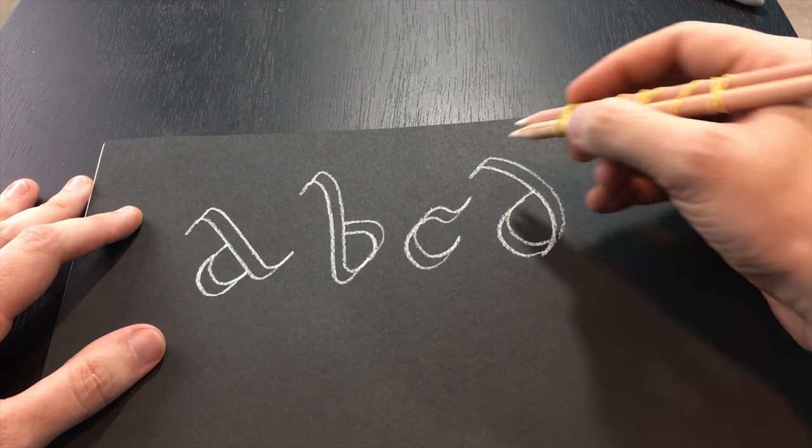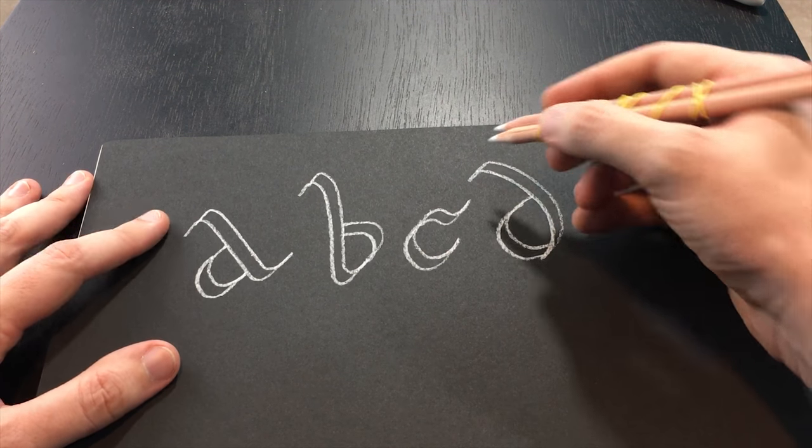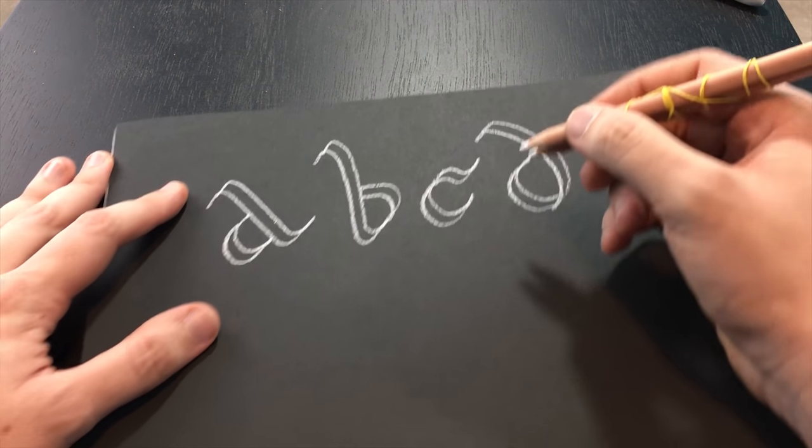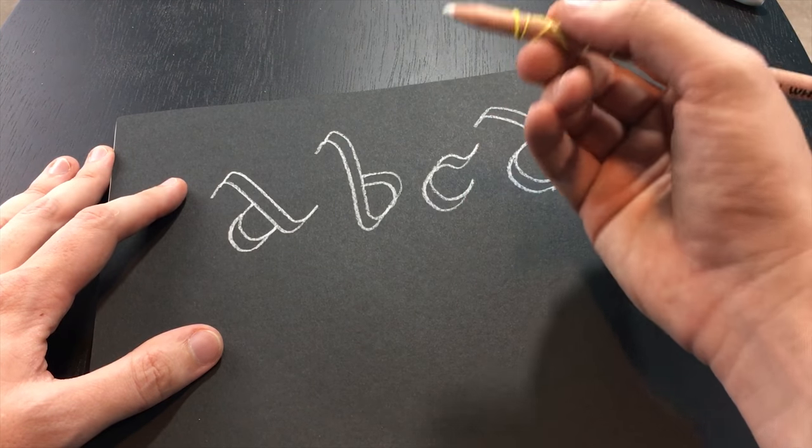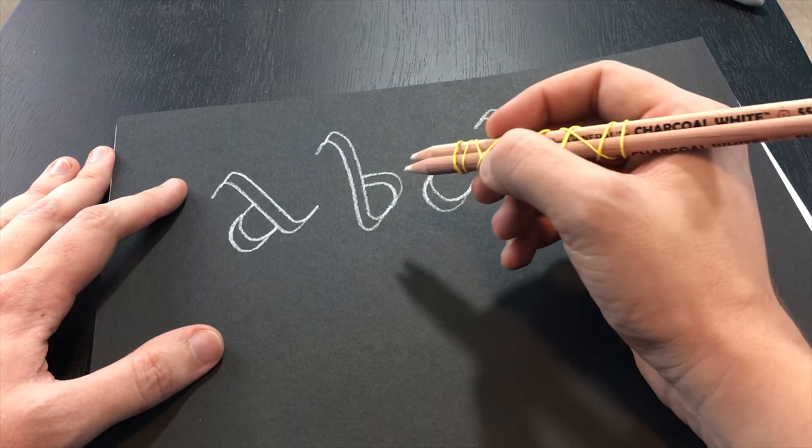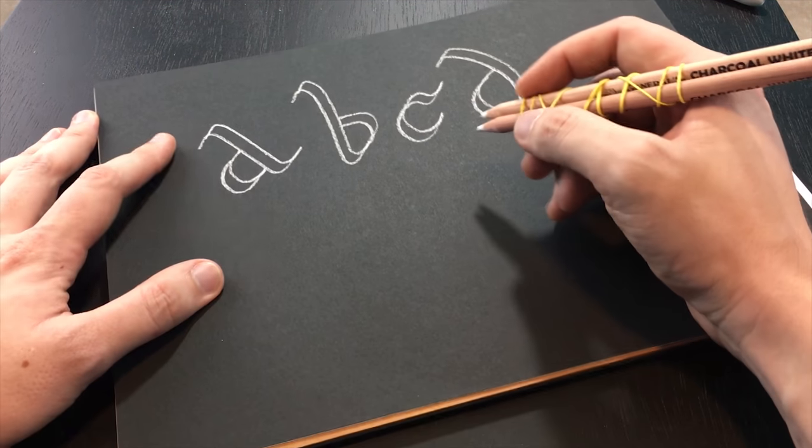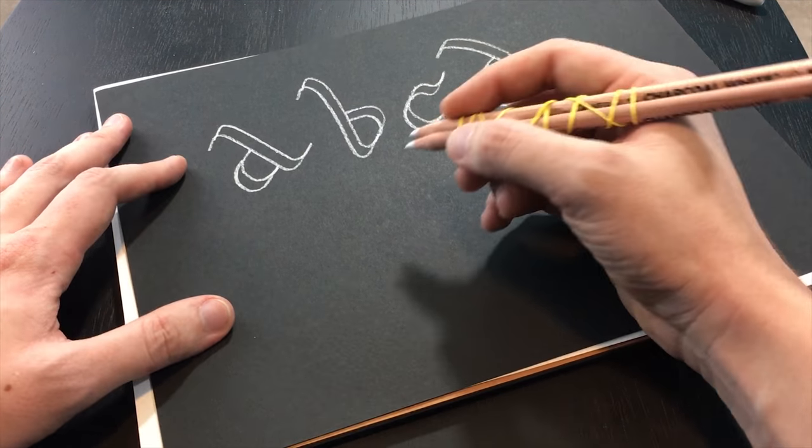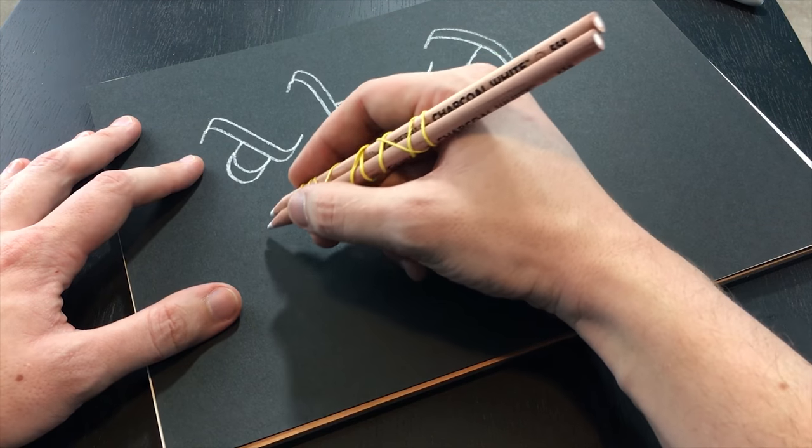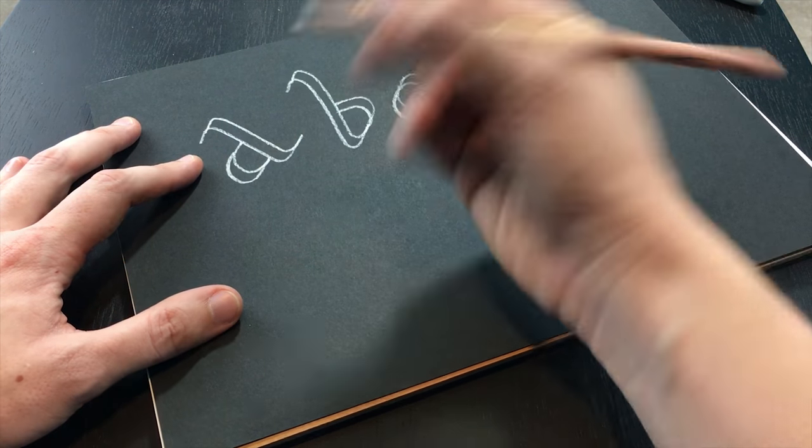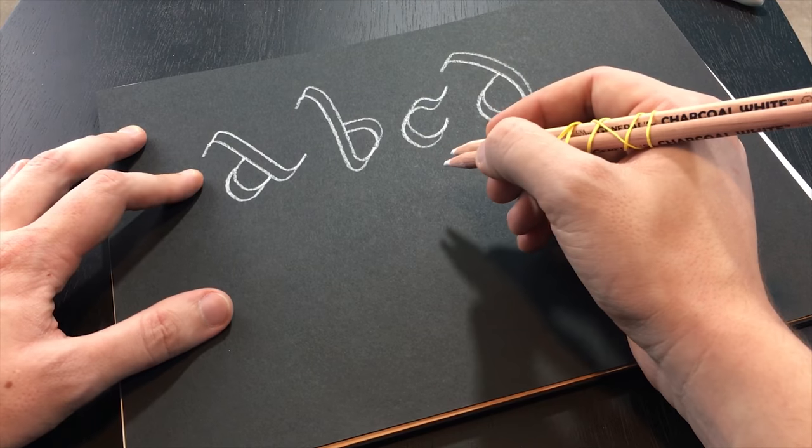So you can kind of see how this works, and it's pretty neat because instead of having to take two separate pencils, you can almost do it in one. And again, this is charcoal. It's a little bit smoother with graphite, but I just want to try it to see how it looked on black paper. So let's say you wanted to do a word because you kind of get the idea already of how it works.